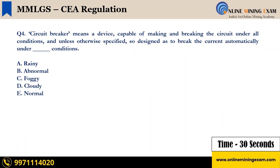Circuit Breaker means a device capable of making and breaking the circuit under all conditions, and unless otherwise specified, so designed as to break the current automatically under dash conditions. The options are: A) Rainy, B) Abnormal, C) Foggy, D) Cloudy, E) Normal. Your time starts now.